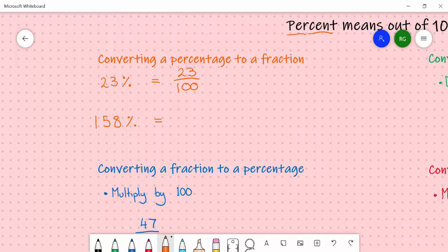100% would be 100 out of 100. The key here is to change the denominator, the bottom line, to be 100.